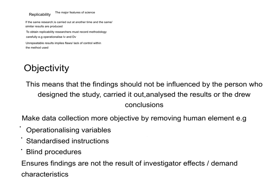To make your data collection more objective, you need to remove the human element. For example, to operationalise variables, to put in place standardised instructions and also blind procedures. This is because the more objective your experiment or research study is, the more confidence people have in your study. These help to ensure that your findings are caused by your variables being investigated and not the result of investigative effects or demand characteristics.